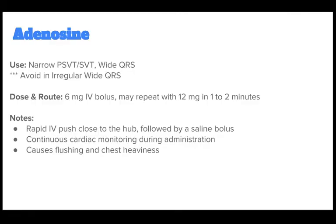Adenosine is a drug used for narrow PSVT, SVT, and wide QRS — though you should avoid it in an irregular wide QRS. The correct dose is 6 mg IV bolus, which you may repeat with 12 mg in 1-2 minutes. Notes: rapid IV push close to the hub followed by a saline bolus, continuous cardiac monitoring during administration, and it causes flushing and chest heaviness.